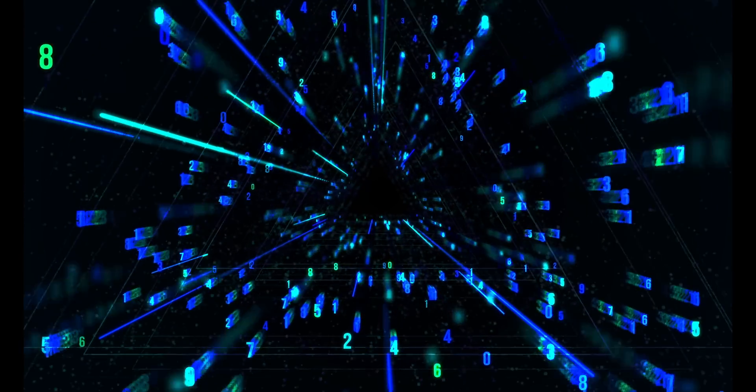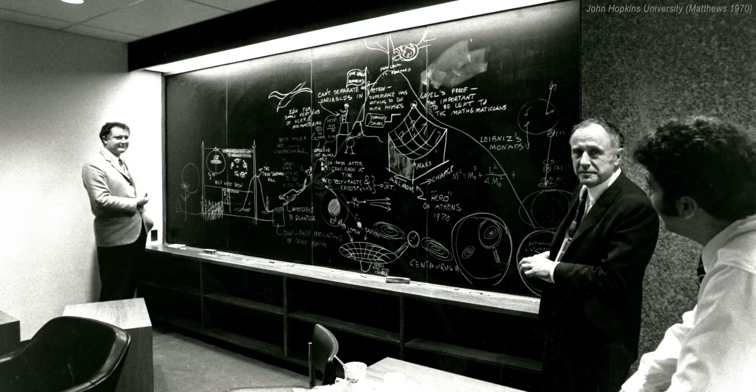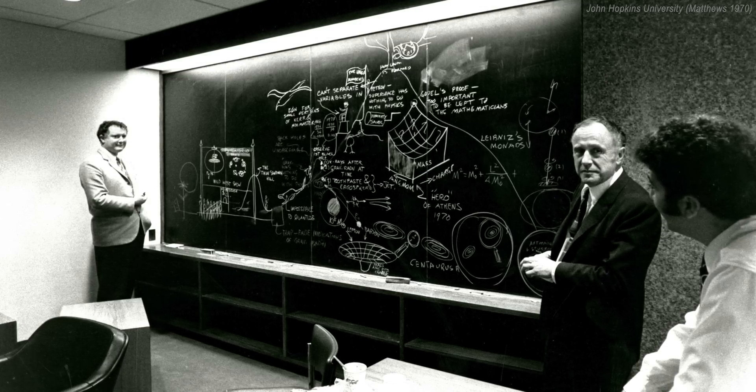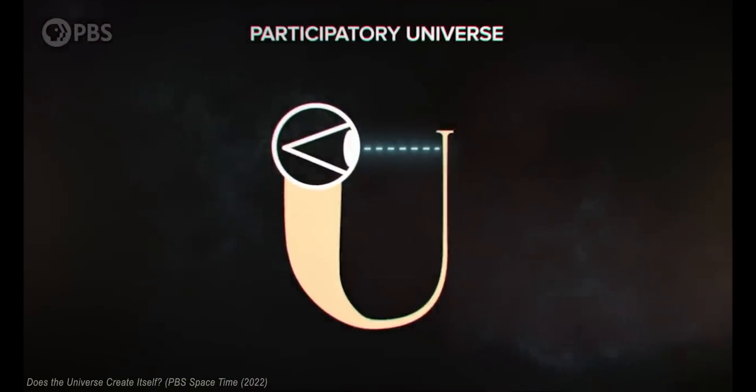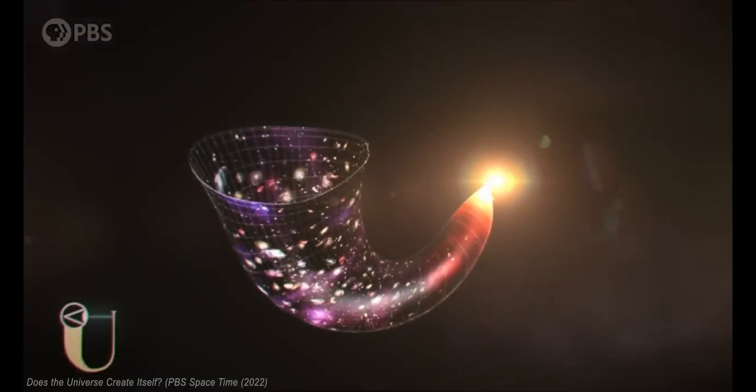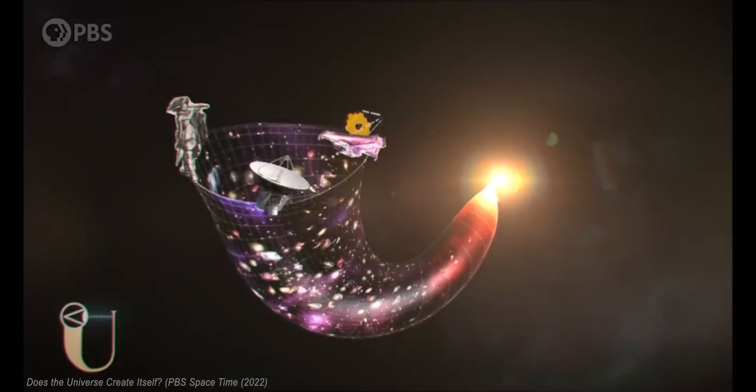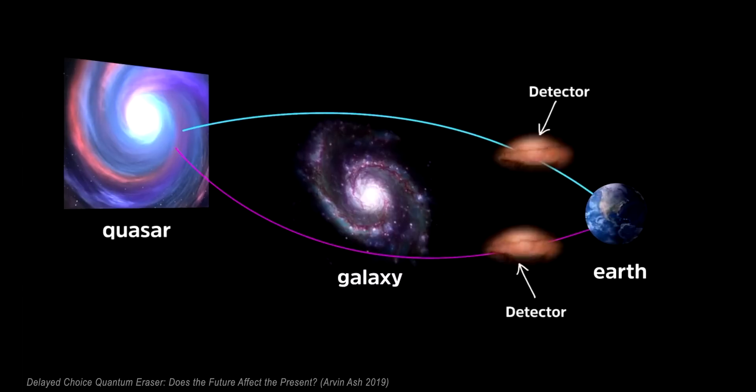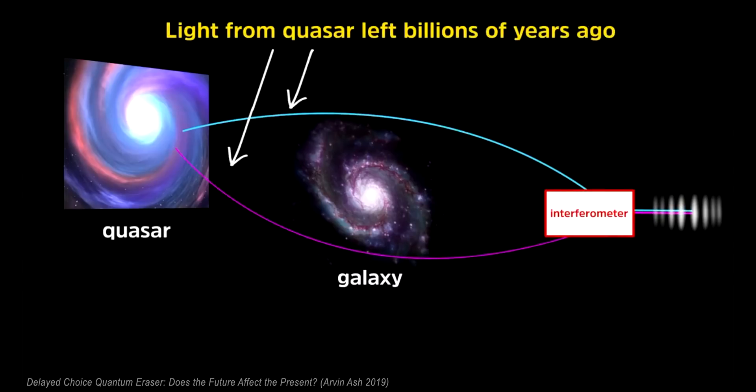This notion evokes the concept of it from bit, set forth by legendary physicist John Wheeler. He proposed that all things physical are information theoretic in origin and that this is a participatory universe. The eye in his famous diagram symbolizes the active role of the observer in acquiring information and shaping our understanding of reality. For example, we can affect the trajectory of light from a distant star in the past by how our telescopes view it today. By observing and interacting with the world, we actively participate in the creation of the information that underlies the universe.